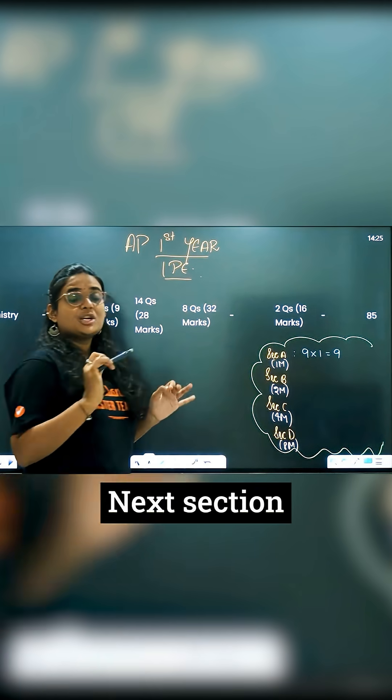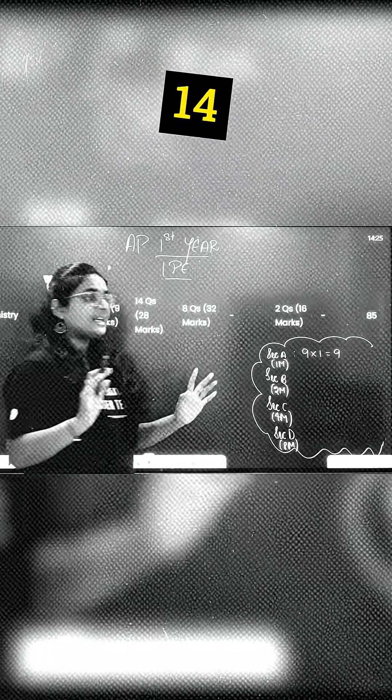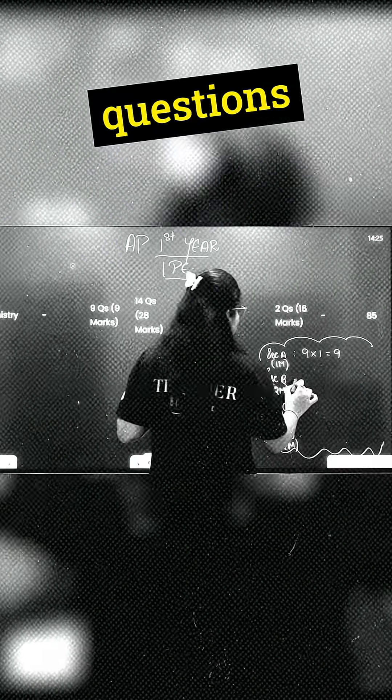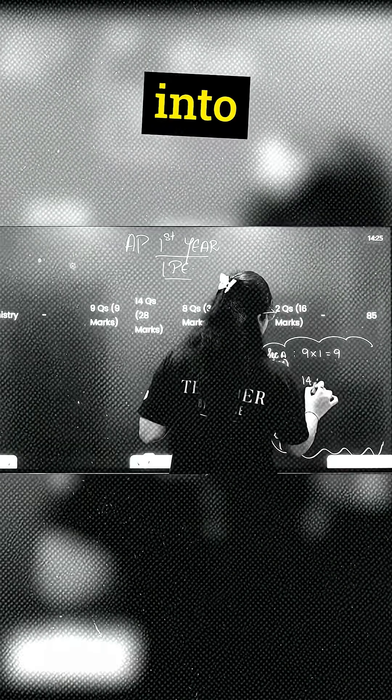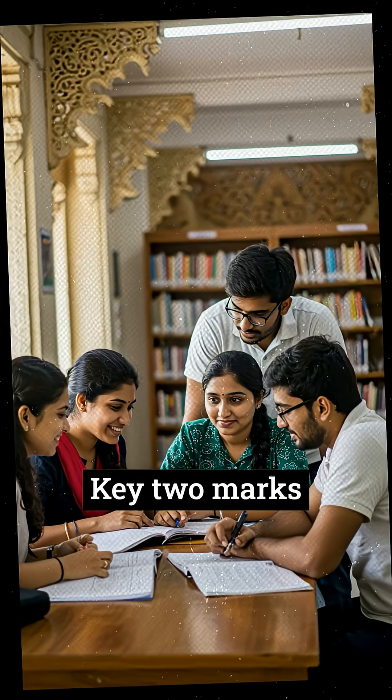Section B has 2-mark questions. There are 14 questions, so 14 into 2 equals 28 marks.